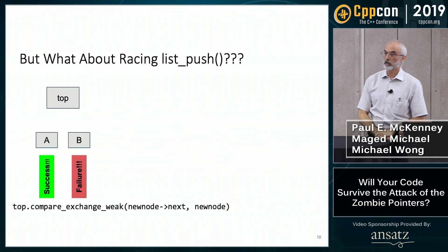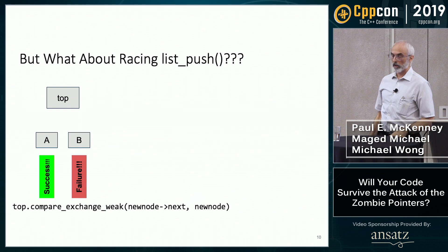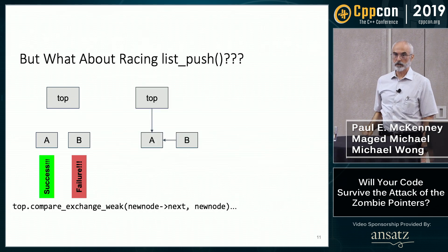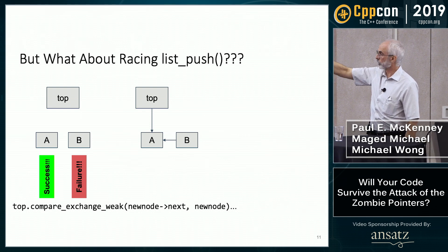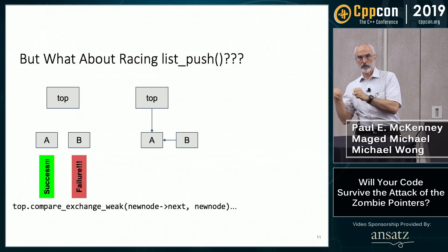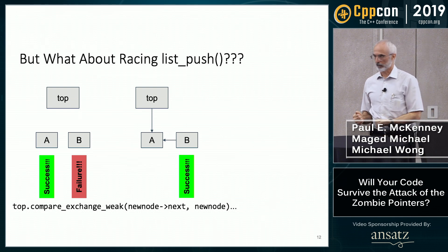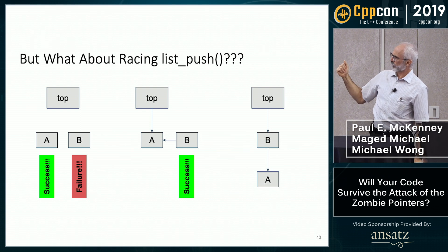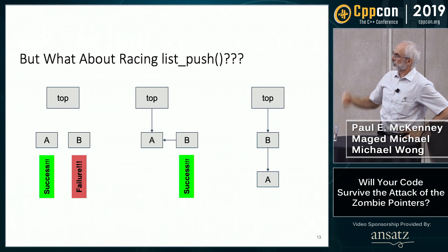Both threads do compare_exchange_weak. One can succeed; the other has to fail. The A thread succeeds, B loses. compare_exchange takes B and stores the next pointer to the new value of top, which is A. Now top points to A. The other thread retries, succeeds with no competition, and the new state has both elements on the stack. No ordering of the two elements is guaranteed because they're concurrent — and it's interesting that the thread that won ends up at the end of the list.